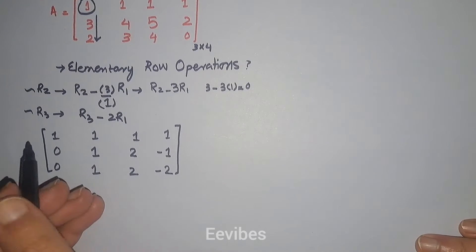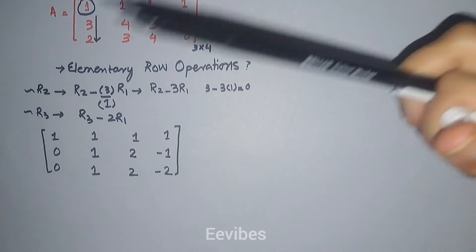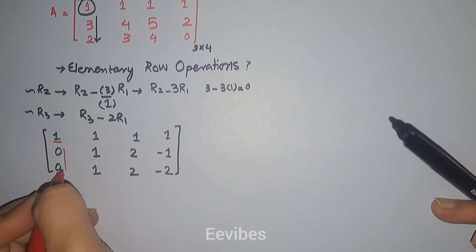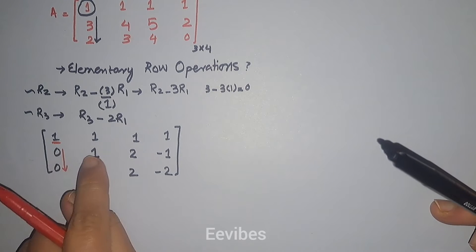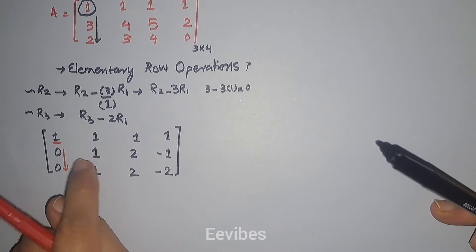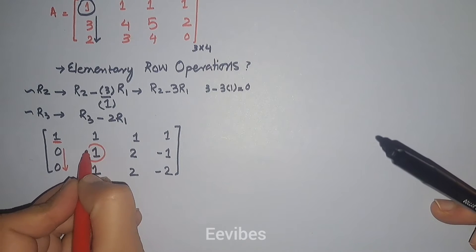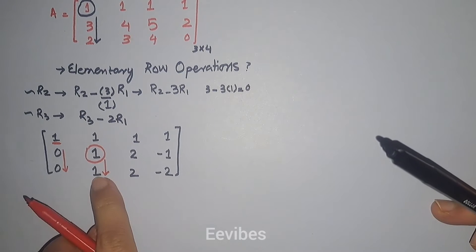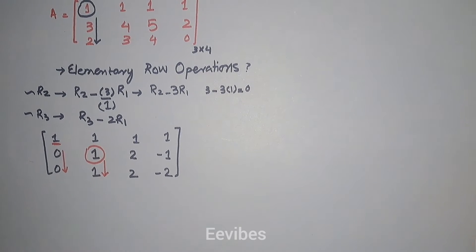This was our pivot value in the first row, and we made all entries below it equal to zero. Now we look at the pivot in the second row. The first non-zero entry in the second row is one, so this is the pivot entry, and now we have to make all entries below it equal to zero.